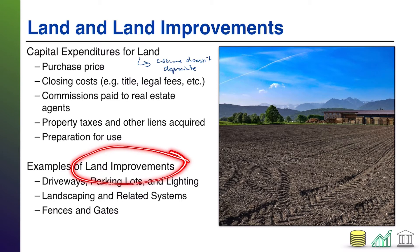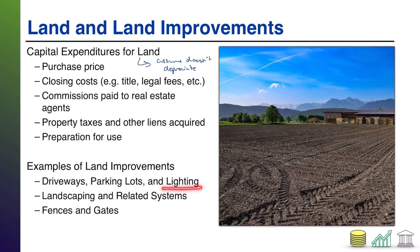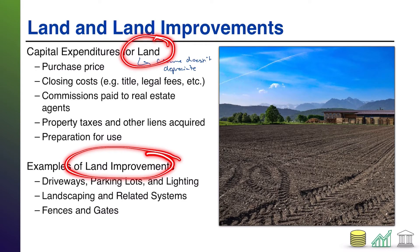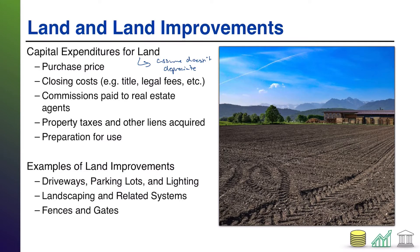However, all of the stuff you build on top of the land — well, that stuff depreciates. Parking lots crack over time. Driveways get holes in them. Lighting systems fail. Landscaping needs to be replanted. Sprinkler systems break. Fences deteriorate. Gates get rusty. All of that stuff does lose value over time and needs to be depreciated. So just to help with the separation of a non-depreciable asset from a depreciable asset, we track land and land improvements as two separate accounts.